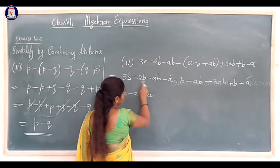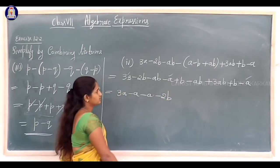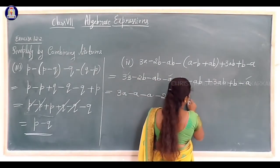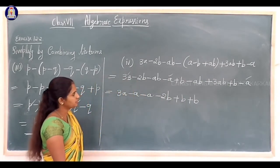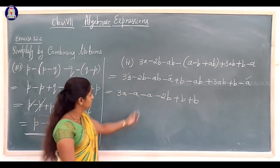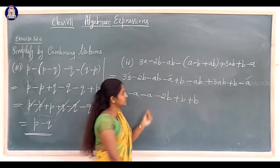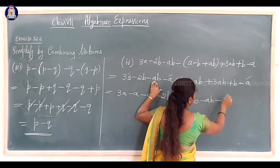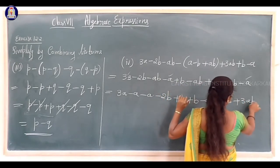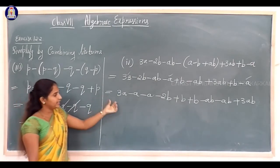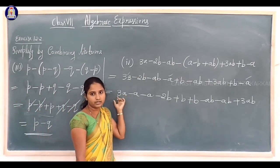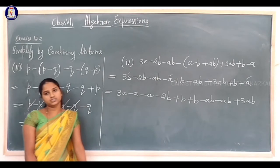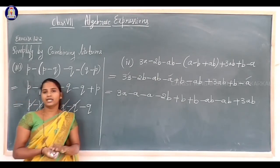Now combine like terms. The a terms are: 3a, minus a, and minus a. The b terms are: minus 2b, plus b, and plus b. The ab terms are: minus ab, minus ab, and plus 3ab. Group each set of like terms together before simplifying.